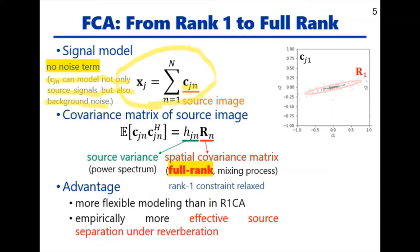Unlike in R1CA, the covariance matrix of the source image is modeled by a full-rank matrix as shown here. Here, H is the variance of the source signal as before, and R is a full-rank spatial covariance matrix modeling the mixing process. Consequently, as shown in the figure, the source image lies more or less in an ellipse representing the spatial covariance matrix. Since the rank-1 constraint has been relaxed, more flexible modeling is possible than in R1CA, leading to empirically more effective source separation under reverberation.